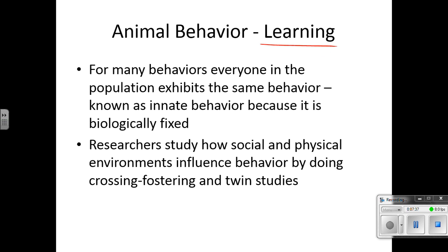For many behaviors, everyone in the population exhibits the same behavior — known as innate behavior, because it is biologically fixed. Think about the innate immune system: it's the first responder, the quick one that you're biologically born with. Researchers study how social and physical environments influence behavior by doing cross-fostering and twin studies.